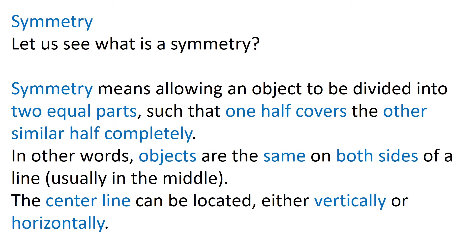Children, let us first see what is symmetry. Symmetry means allowing an object to be divided into two equal parts such that one half covers the other similar half completely. In other words, objects are the same on both sides of a line. Usually the line is in the middle. The center line can be located either vertically or horizontally.